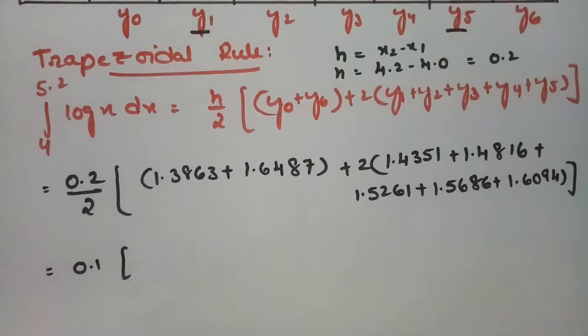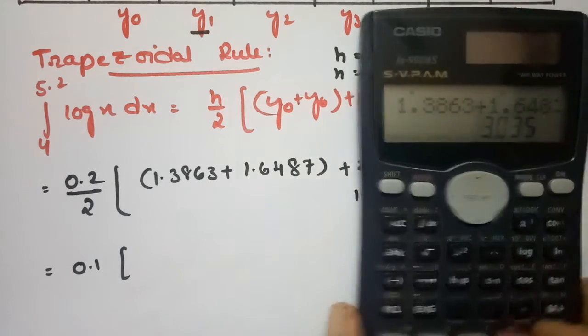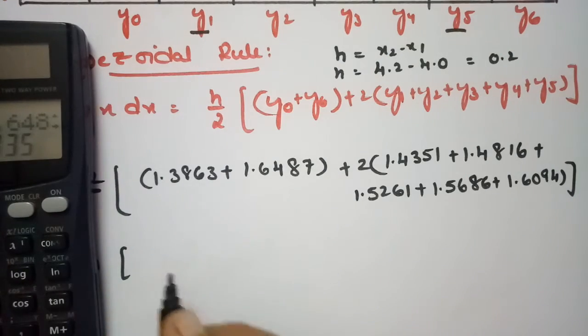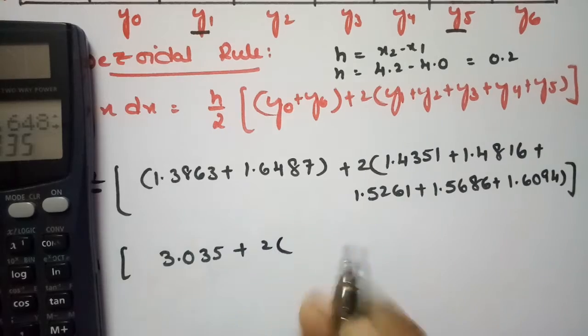So this is nothing but 0.1 times. So if I add this, this is 1.3863 plus 1.6487. The value here is 3.035 plus 2 times of.